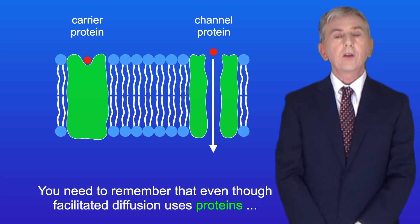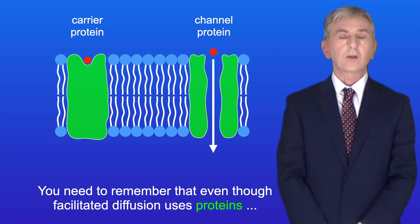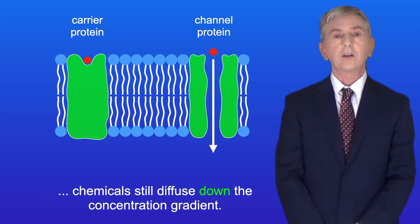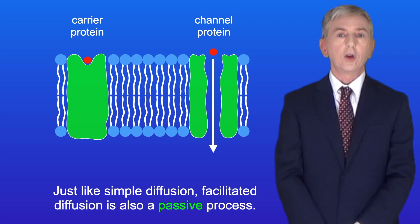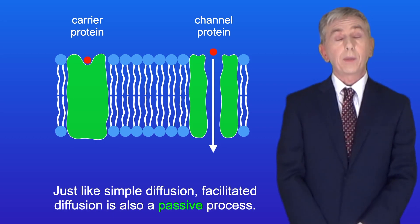You need to remember that even though facilitated diffusion uses proteins, chemicals still diffuse down the concentration gradient. And just like simple diffusion, facilitated diffusion is also a passive process.